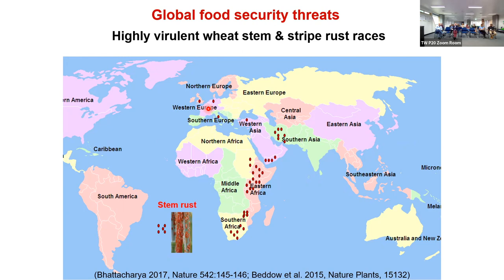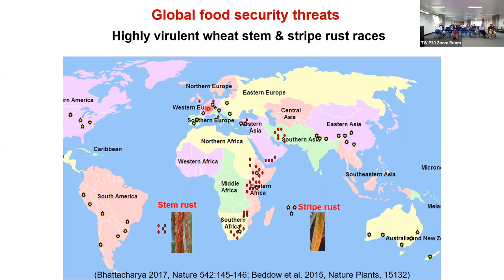One major issue is that stem rust has started adapting to cooler climatic conditions — normally it occurs in warm conditions, but strains appearing in Europe tolerate cool climates. Similarly, stripe rust, traditionally a cooler-climate pathogen, has evolved races able to withstand warm conditions, and it has appeared in Africa, Australia, China, India, America, and Europe. This has become a very big issue.